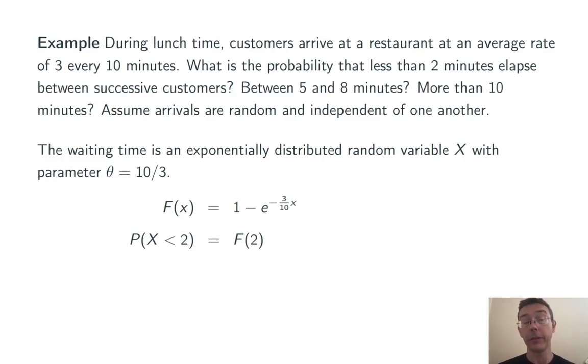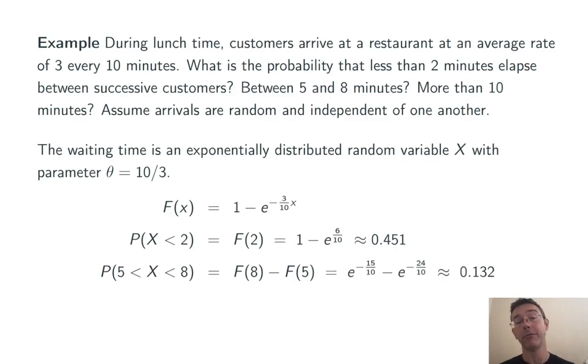The probability that x is less than 2 is f of 2, so 1 minus e to the negative 6 tenths, about 45.1%. The probability that x is between 5 and 8 is f of 8 minus f of 5. That comes out to about 13.2%. And the probability that x is greater than 10, that the waiting time is more than 10 minutes, is 1 minus f of 10, e to the negative third, or about 5%.